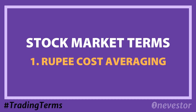In this video, I will cover rupee cost averaging. For example, if you bought a stock at 100 rupees and the price drops to 80 rupees, you can buy more at 80 rupees. Your average purchase price becomes 90 rupees. So if the stock rises above 90 rupees, you make a profit. Without averaging, you still need the price to reach 100 rupees. This concept is similar to a mutual fund SIP — that is rupee cost averaging.